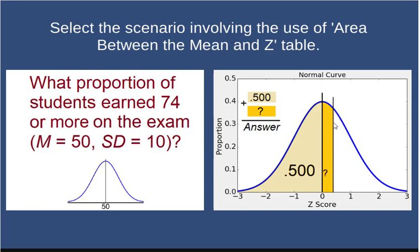If we want to find the proportion of the distribution from this point downward, I'd combine the area between the mean and z plus 0.5.